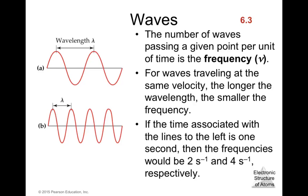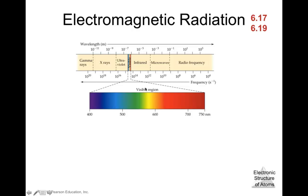Here we have the electromagnetic radiation spectrum showing the visible region, and also gamma rays, X-rays, ultraviolet, infrared, microwaves, and radio frequency. The wavelength increases from left to right — units are in meters — while frequency increases from right to left. Wavelength and frequency are inversely proportional: when one increases the other decreases.